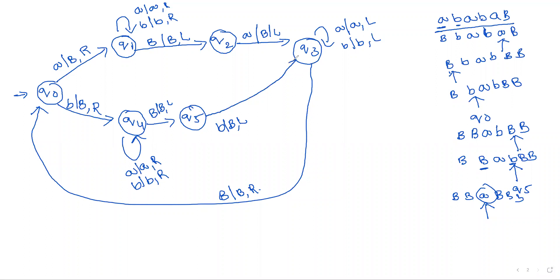From q6 we return to q0, or alternatively from q5 we can move to q3. On q3, 'a' is replaced with 'a' and move to the left direction. At the left side when a blank occurs, the blank is replaced with blank and move to the right direction. 'a' is replaced with blank — the same process is repeated. These two B's — whatever letter is in the middle, whether 'a' or 'b', is not a problem.